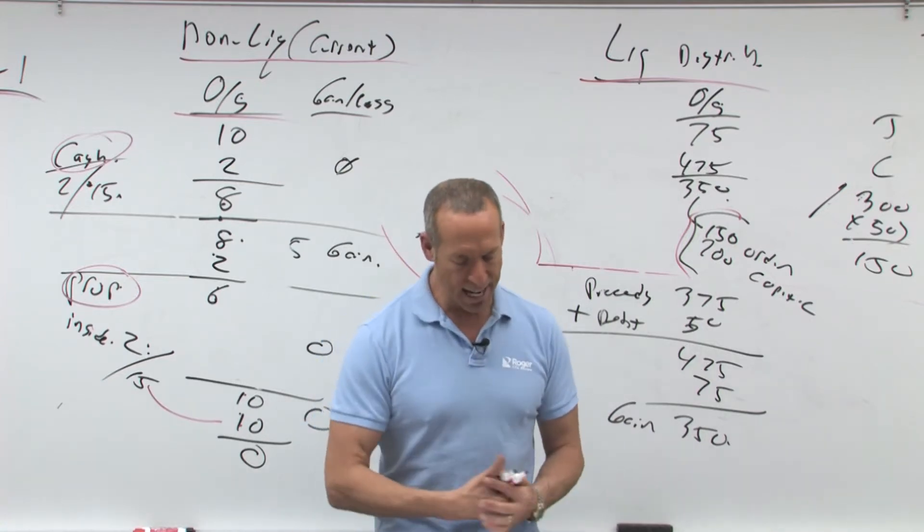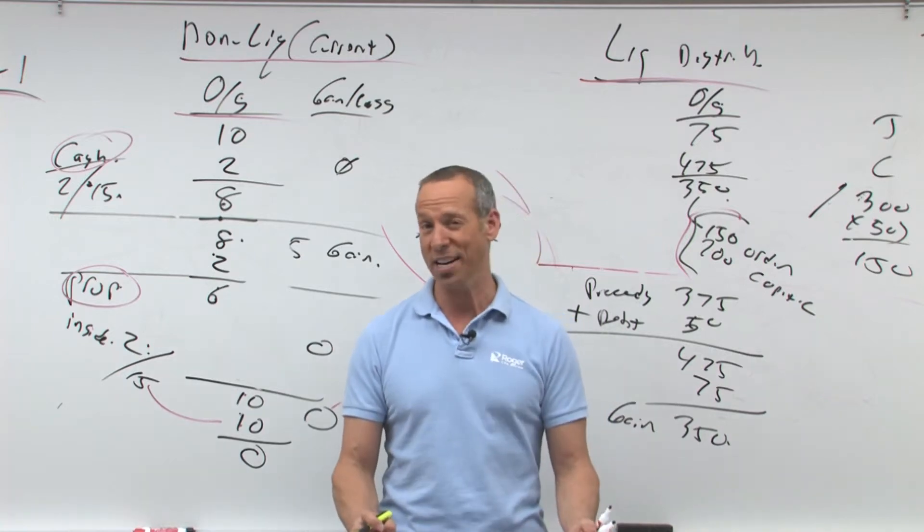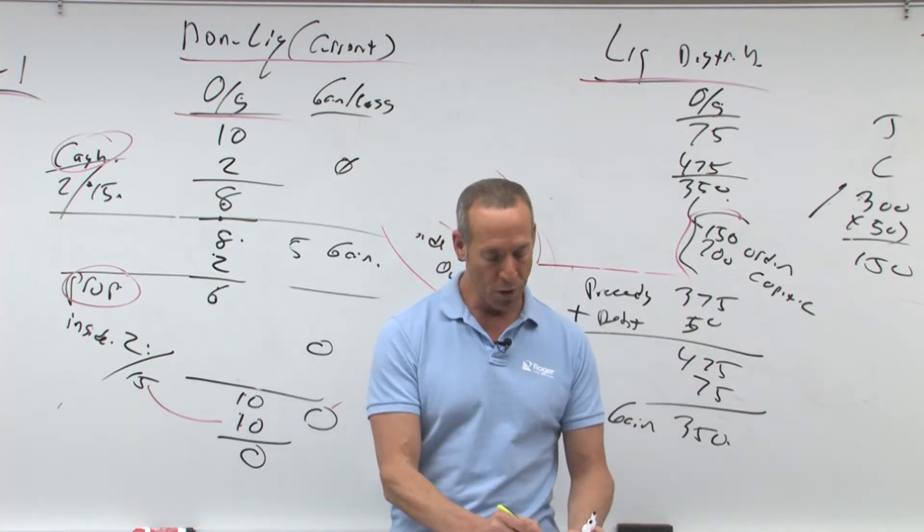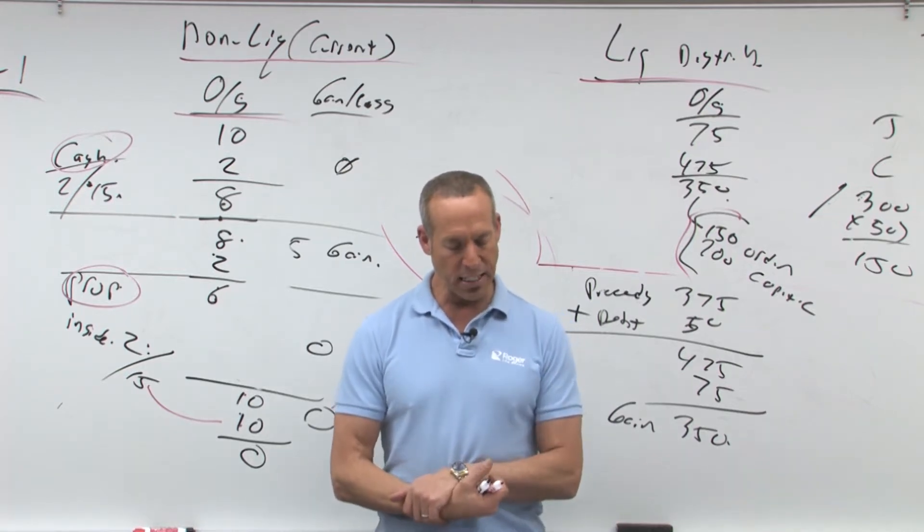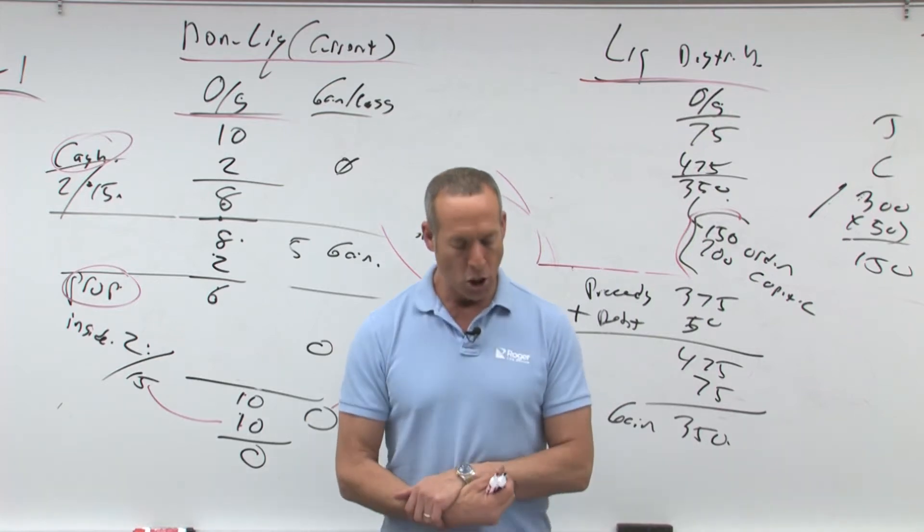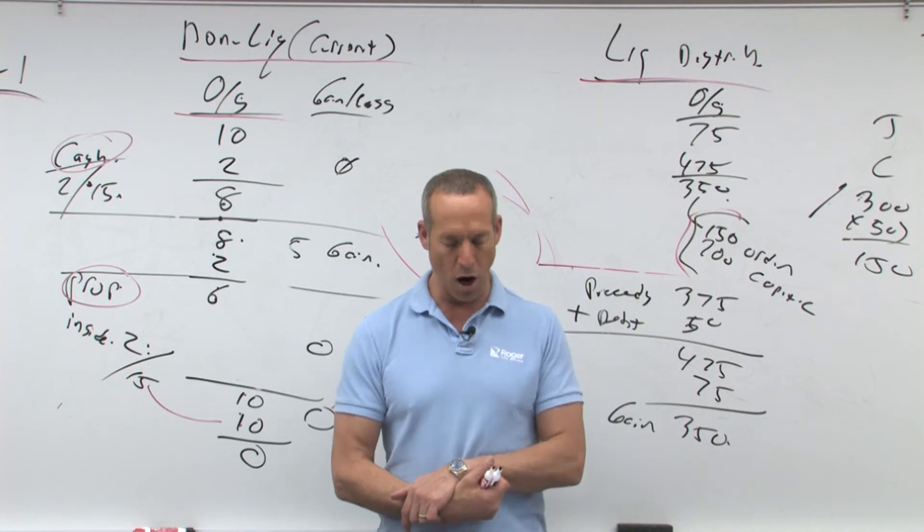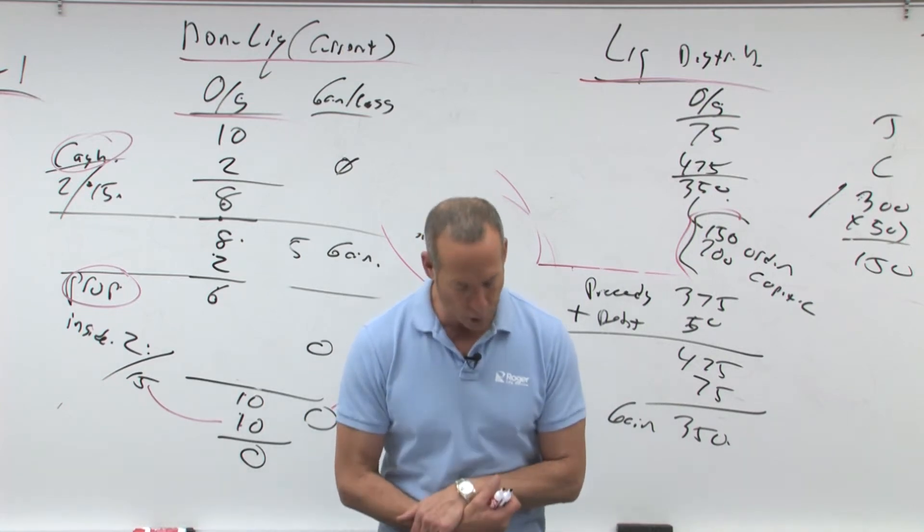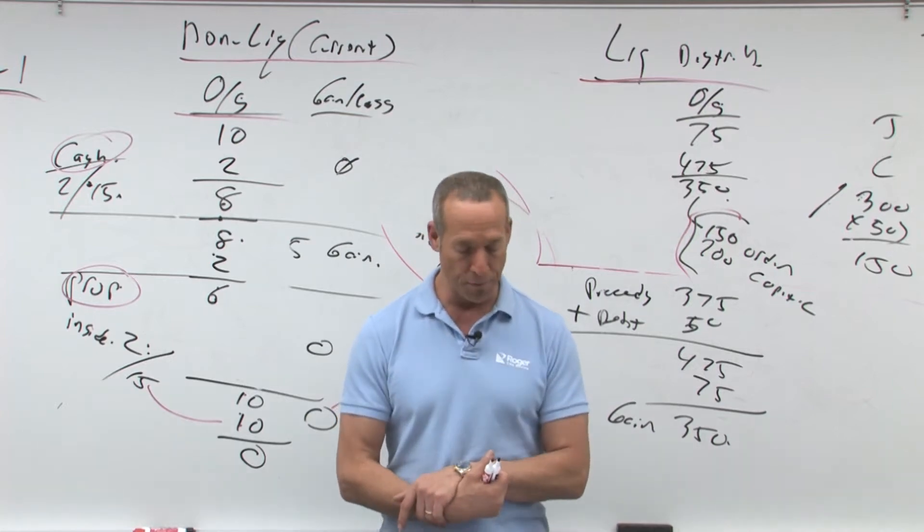Seven says, what amount of taxable gain must Jody report on the result of this distribution? Well, we know if it's property, no gain. If it's cash, there might be. What is Jody's basis in the distributed property? The adjusted basis of Jody's partnership interest was $50,000 immediately before Jody received a current distribution of $20,000 cash and property with an adjusted basis to the partnership of $40,000 and a fair value of $35,000.